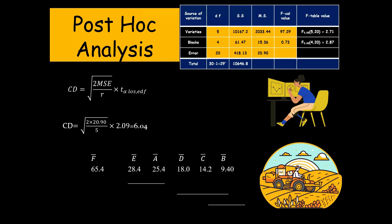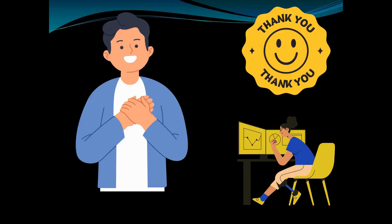RCBD is widely used whenever conducting experiments in fields where the experimental material is heterogeneous. The key conditions are: identification of the fertility gradient and that it moves in only one direction. Each block contains a complete set of treatments, randomly assigned within each block. In the next video, we will learn which design to use when the fertility gradient runs in two directions. Thank you very much.